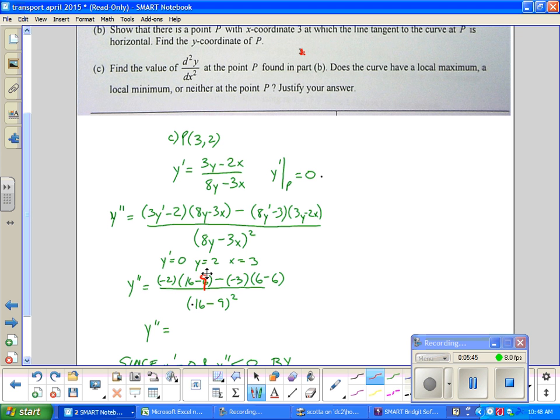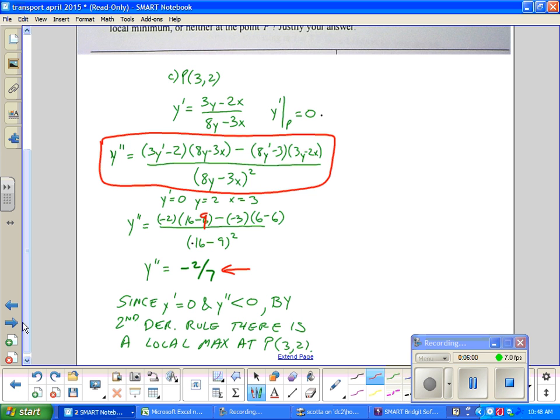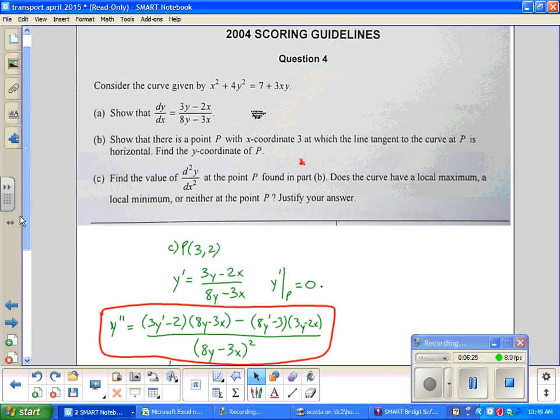And simplify to negative 2 sevenths. So that you did the derivative. So even if you were struggling with part b. The derivative here is worth 2 points. This value is worth 1 point. I had a math mistake. I wouldn't have gotten it. I took 3 times 3 and got 6. But I would have got the last thing which was since y prime was equal to 0 and y double prime is less than 0 by the second derivative rule the curve has a maximum. And you've got to say this for sure. And I think it's important to say this. Everybody keep practicing. Keep practicing. Thank you.